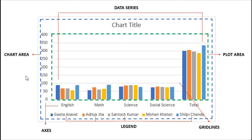Next is the plot area. It is also a rectangular area located within the chart area, and here the data is plotted. The green dotted line you can see in this picture represents the plot area, and inside this green dotted line the data is plotted.